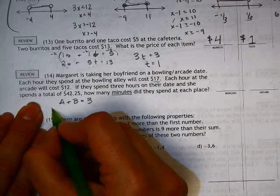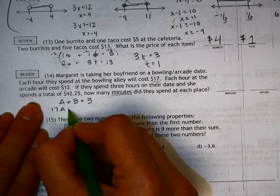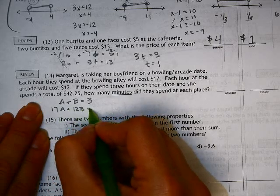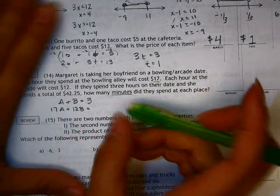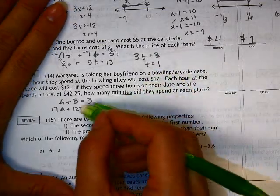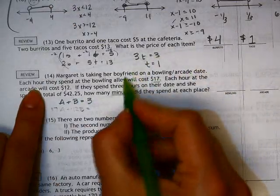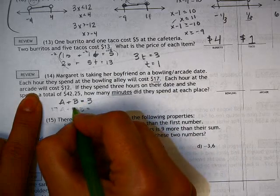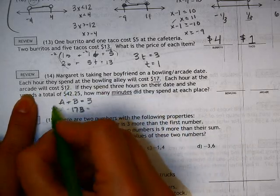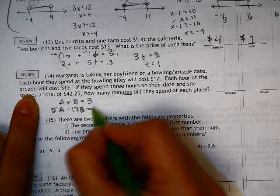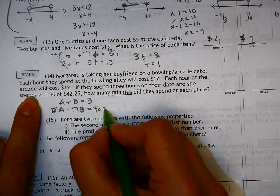And we have $17 for the alley and $12 for the bowling. No, I did that wrong, didn't I? We have the arcade and the bowling alley. So the bowling alley is $17. And the arcade, my bad, is that. And that is equal to $42.25.